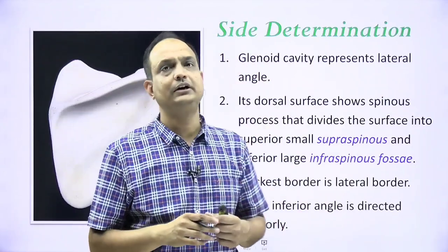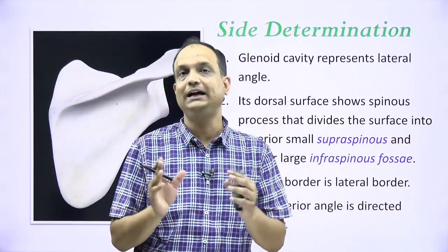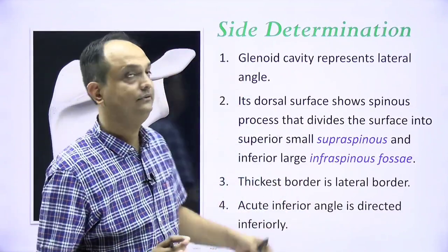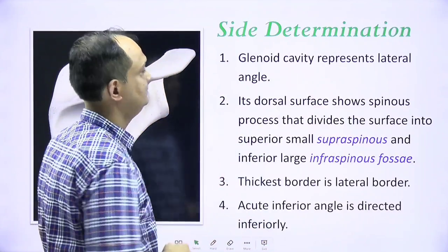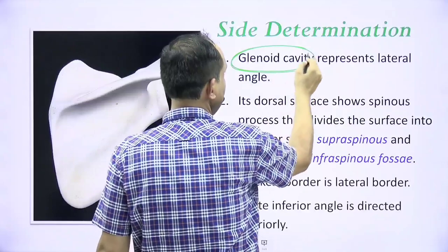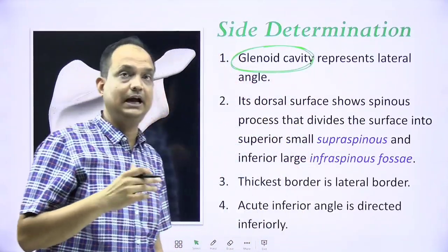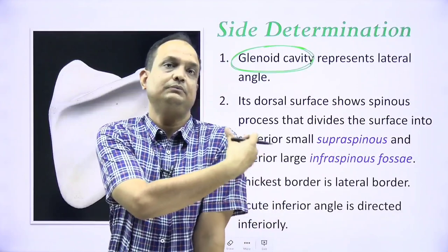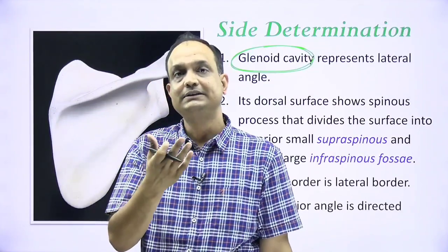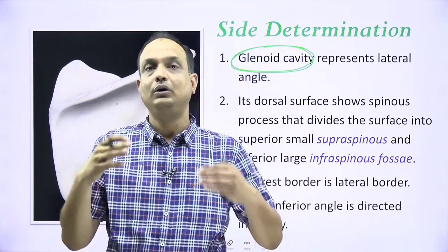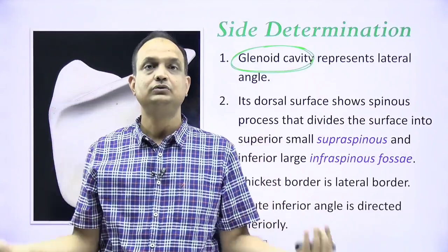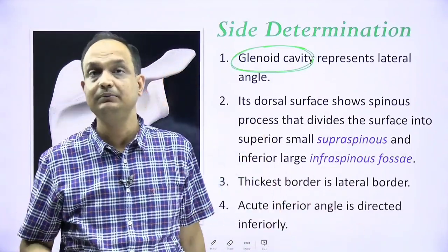Now how do we determine the side of this bone? Scapula is a paired bone, so whenever we have a paired bone we have to identify the right and left side. The most important thing is the glenoid cavity, which is going to make a joint with the head of humerus. The humerus comes from the lateral side to articulate with the glenoid cavity of the Scapula — this is known as the shoulder joint.